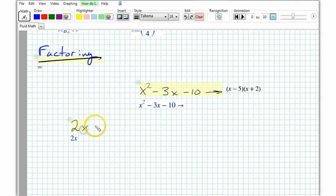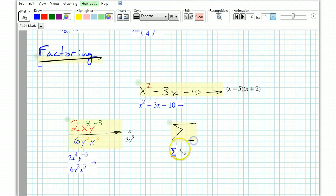It can simplify rational expressions, x to the fourth y to the negative 3 over 6 y squared x cubed, and that simplifies to x over 3y to the fifth. It can even recognize and evaluate sigma notation.